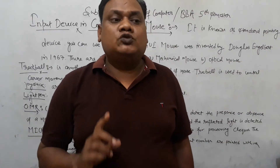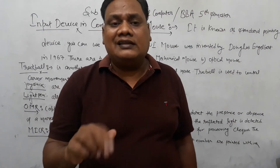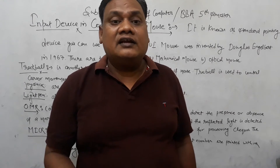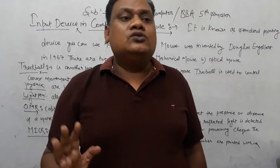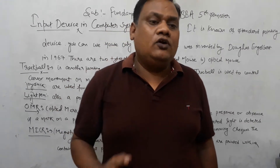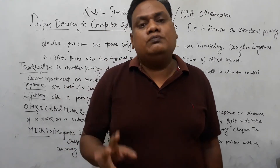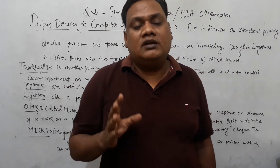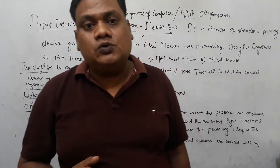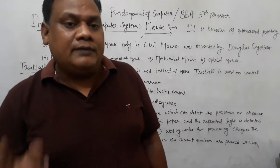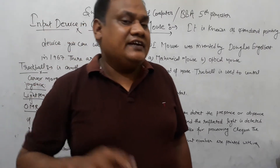If we double click or single click, we can select or drag items. The mouse has two buttons: a primary button and a secondary button.